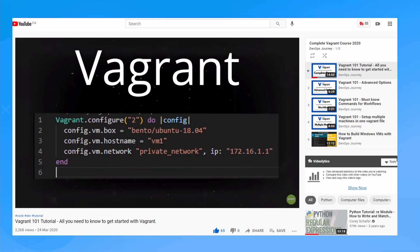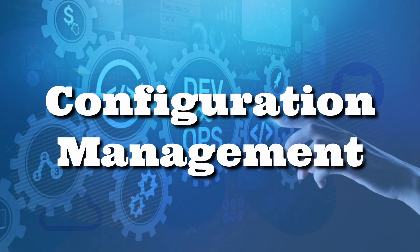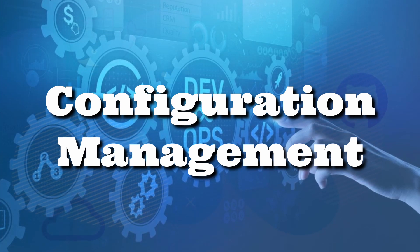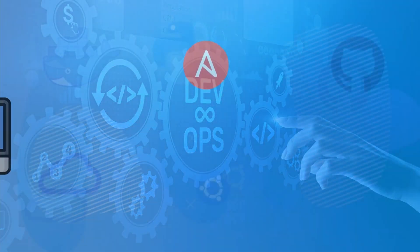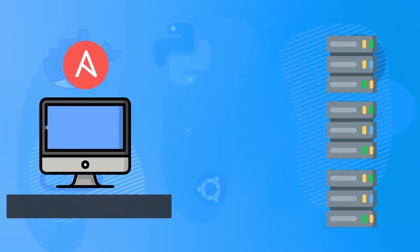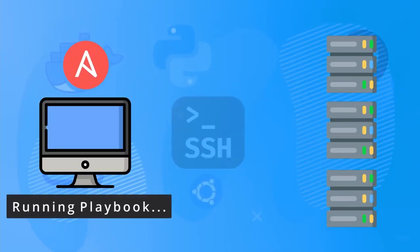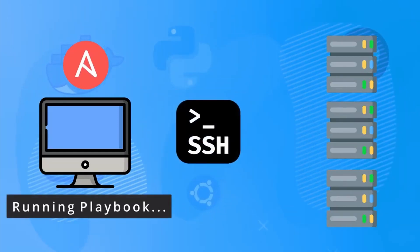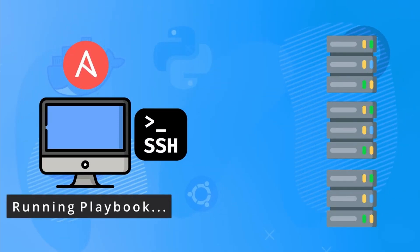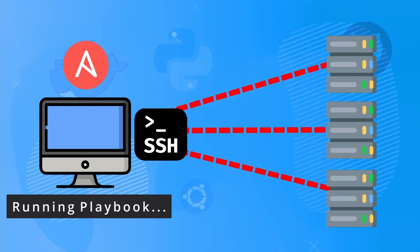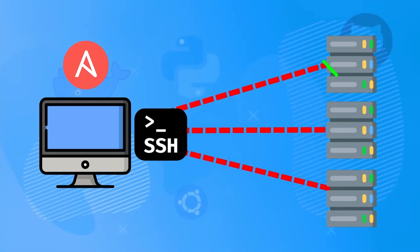After you have your machines provisioned with a tool like Vagrant, the next thing you should do is configure them — and that's where a tool like Ansible comes into play. Use Ansible to manage all your machines and ensure they have a consistent state. Use it to update and patch your machines as well as install the software that your machines need.